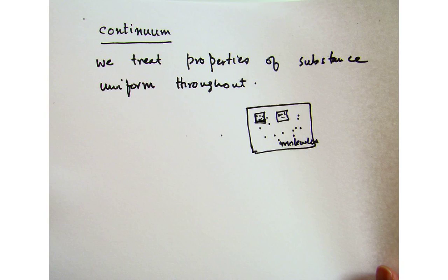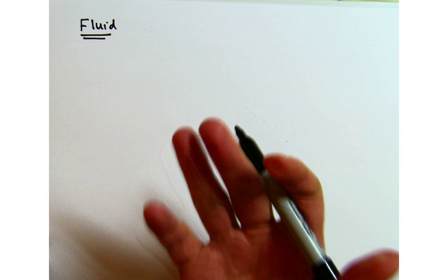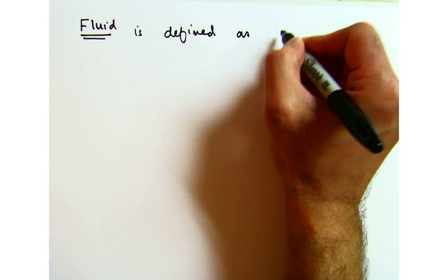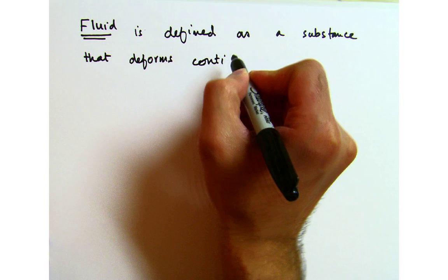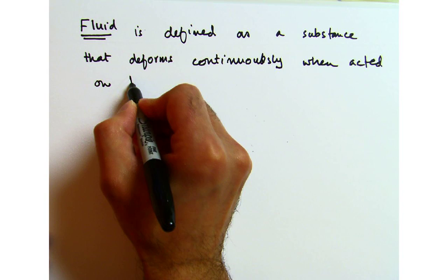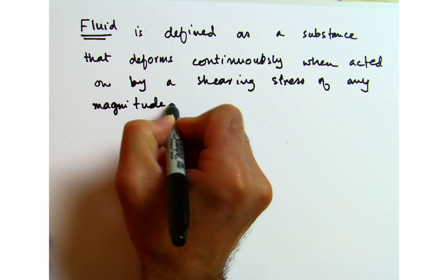So what actually is fluid from an engineering perspective? It is true that it takes the shape of the container, but in addition to that, a fluid is defined as a substance that deforms continuously when acted on by a shearing stress of any magnitude.